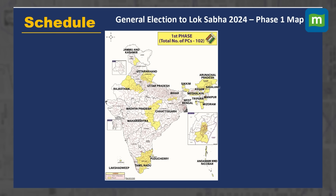The parliamentary constituencies of Jammu Kashmir, Uttarakhand, Uttar Pradesh, Rajasthan, Madhya Pradesh, Maharashtra, Chhattisgarh, Bihar, Sikkim, West Bengal, Meghalaya, Tripura, Mizoram, Manipur, Nagaland, Assam, Arunachal Pradesh, Puducherry, Tamil Nadu, Andaman and Nicobar and Lakshadweep will go for polling.